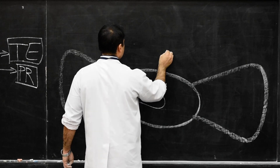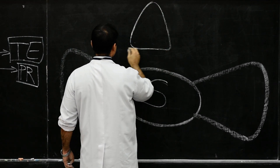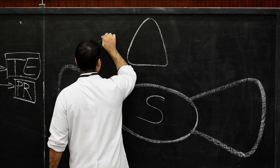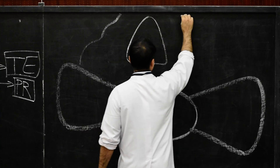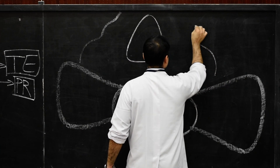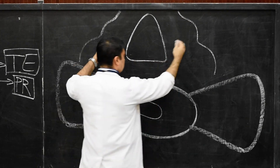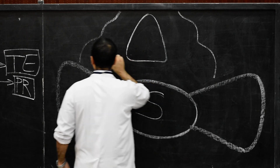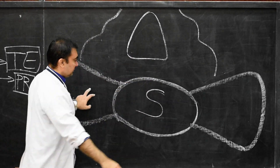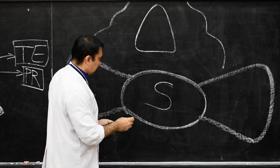Posteriorly, we show the vertebral canal, and from here we show the laminae of the sacrum which proceed posteriorly. This is a cross-section of the sacrum. These two structures are the lateral masses, also called Ella of the sacrum.